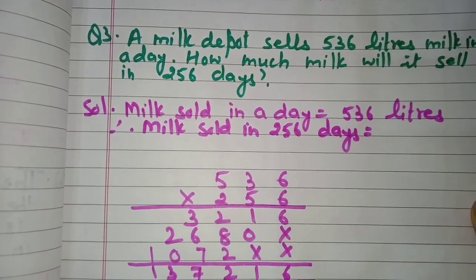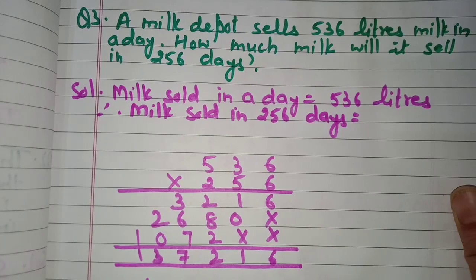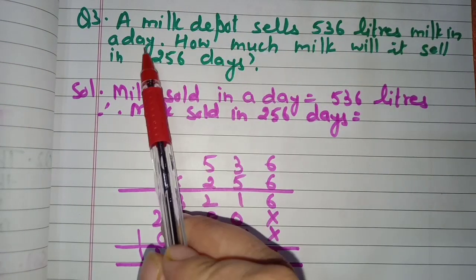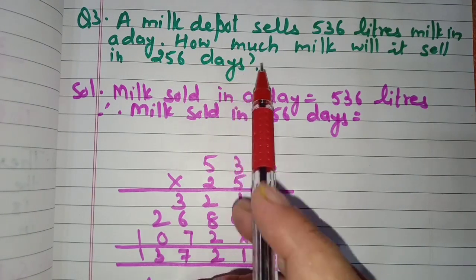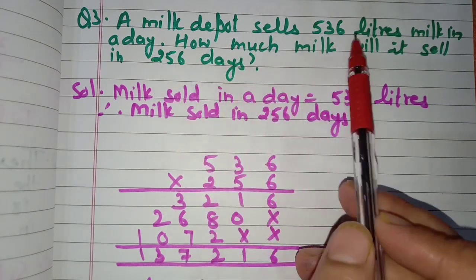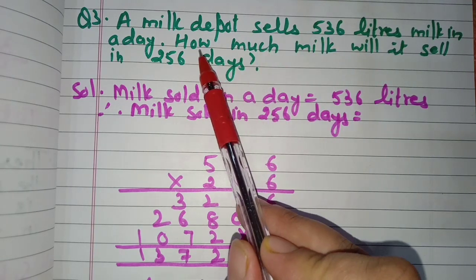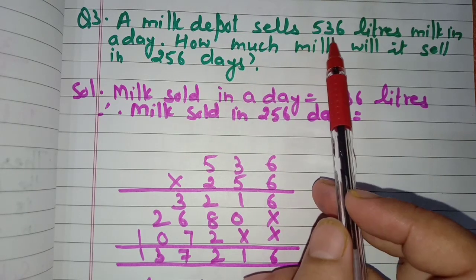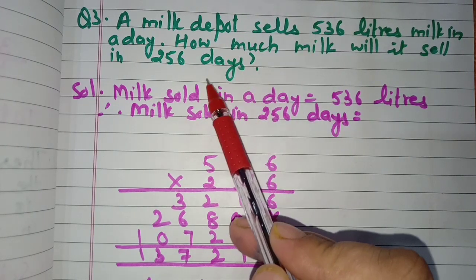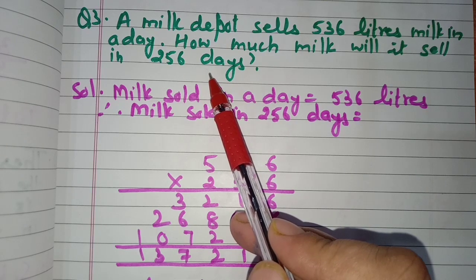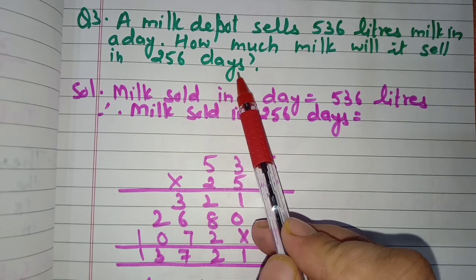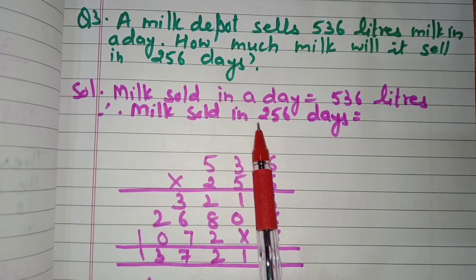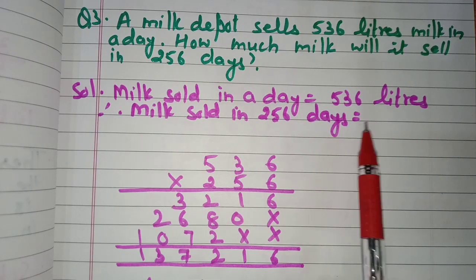Question number three: a milk depot sells 536 liters of milk in a day. How much milk will it sell in 256 days? Milk sold in one day is known, so we can find the milk it will sell in 256 days. Milk sold in a day: 536 liters.